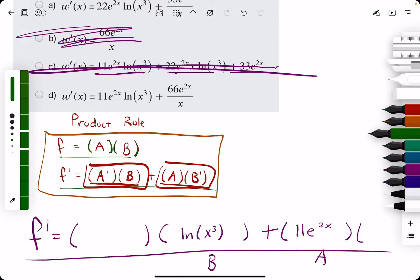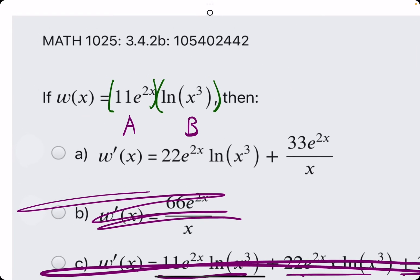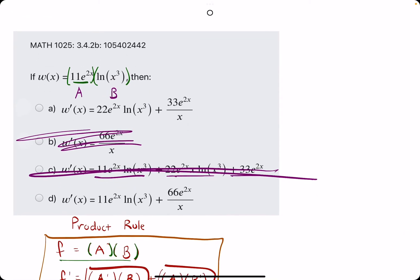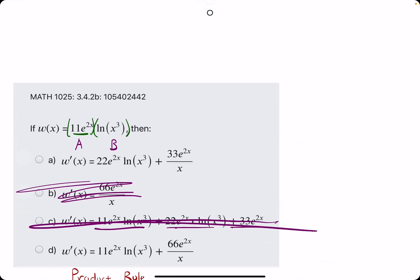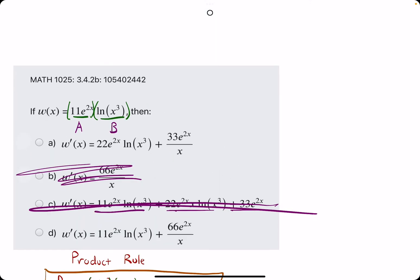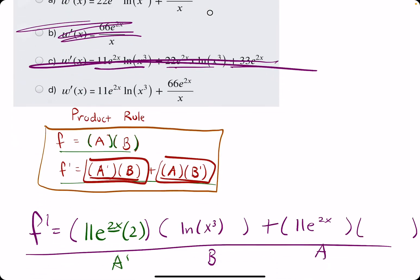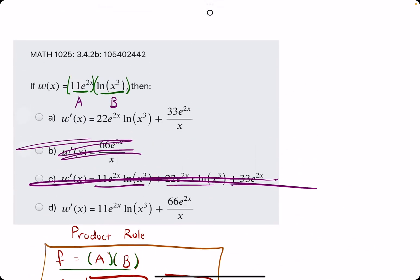a prime is the derivative of 11e to the 2x. 11e to the 2x has a derivative of 11e to the 2x. And then, we multiply by the derivative of the exponent, 2.